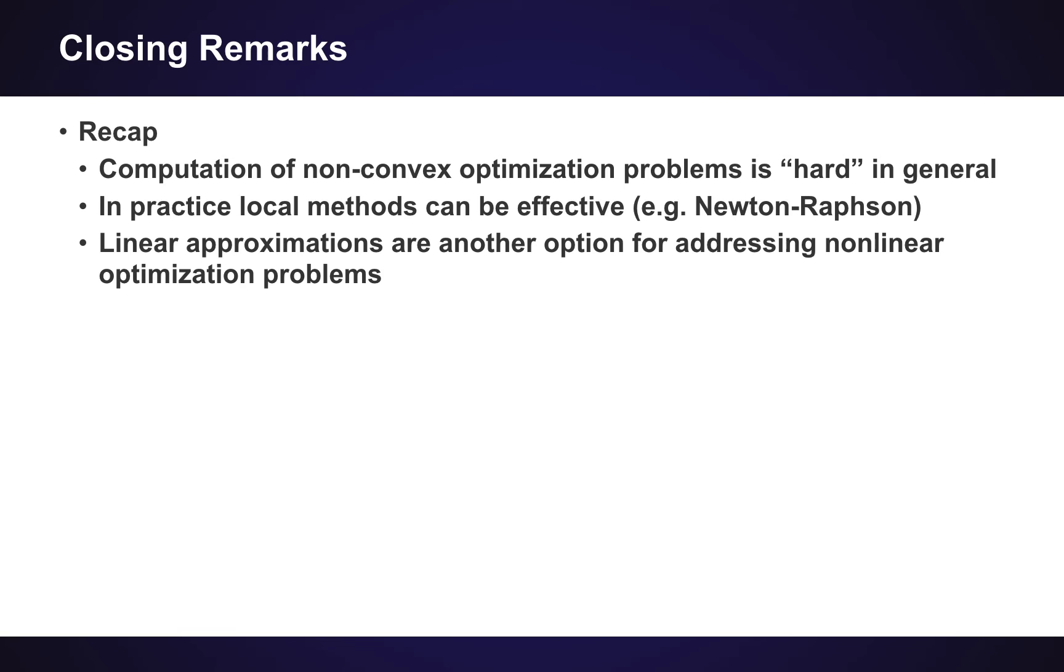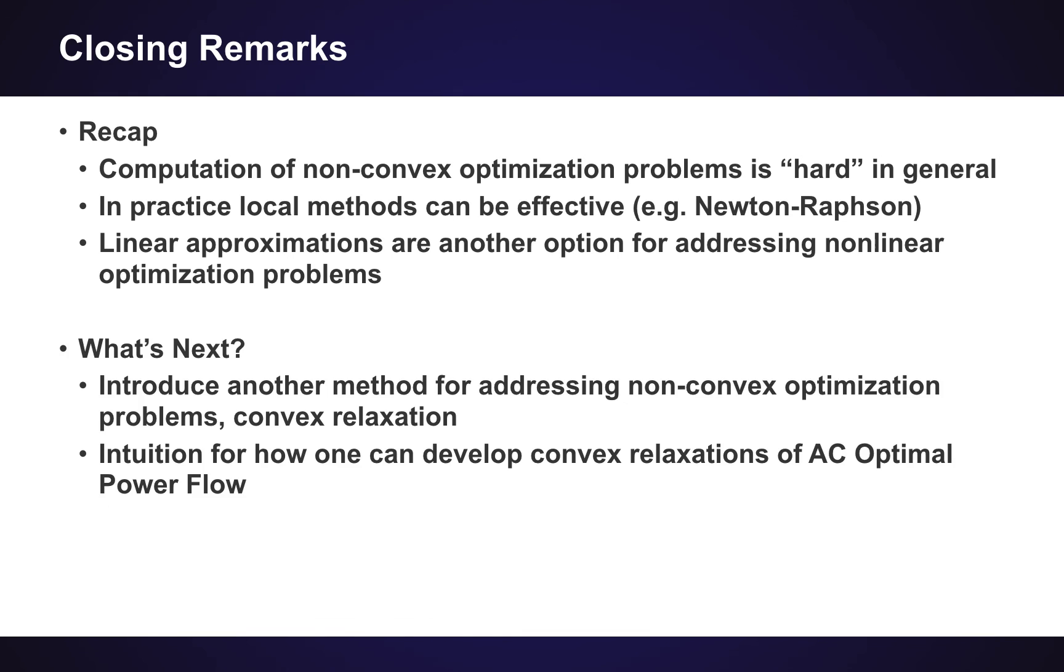Great. So to recap, what we've covered in this lecture is that we've discussed that computation of non-convex optimization problems is hard in general, but in practice, some of these local methods like Newton-Raphson can be effective. When they're not, sometimes people turn to global optimization. And another popular approach to addressing non-convex optimization is to do linear approximations of your original non-linear problem. So what comes next in our series here is that we want to really start looking at the core of this series of presentations by looking at another method for addressing non-convex optimization problems, namely using convex relaxations. And that is what we are going to develop next. And we are going to try and provide you with some intuition for how it is possible to develop such convex relaxations for the AC optimal power flow problem and how is this done.